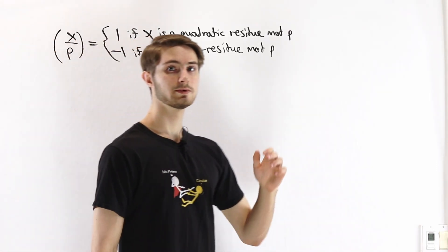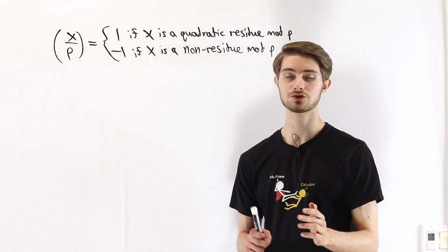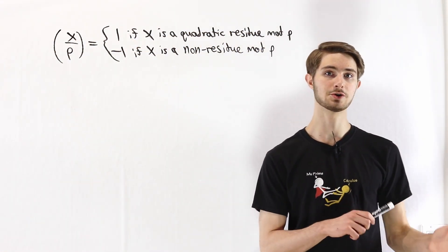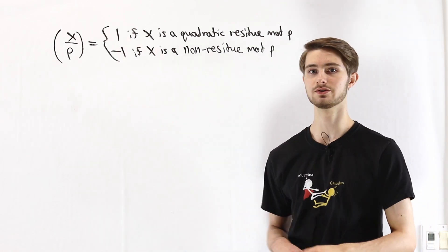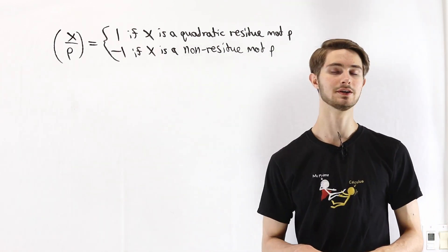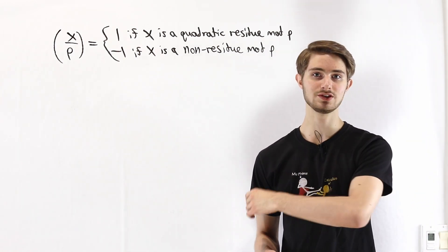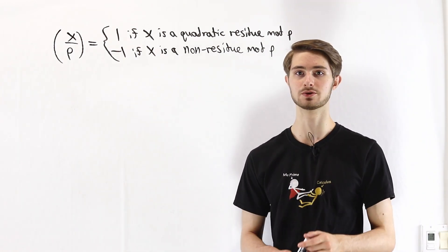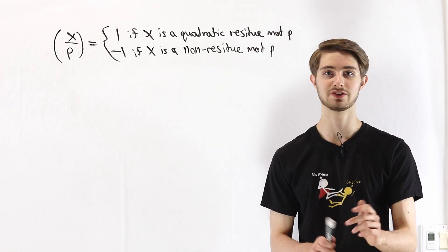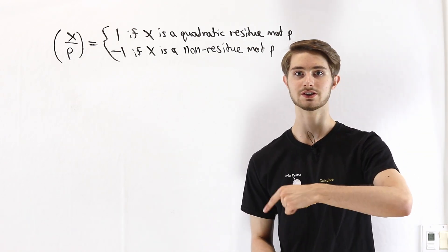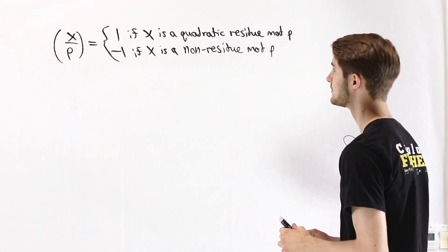We are going to talk about Euler's criterion, which is a useful method for determining whether a number is a quadratic residue mod p. We're going to do that using indices relative to primitive roots. If you aren't familiar with that idea, there's a link in the description you can check out.